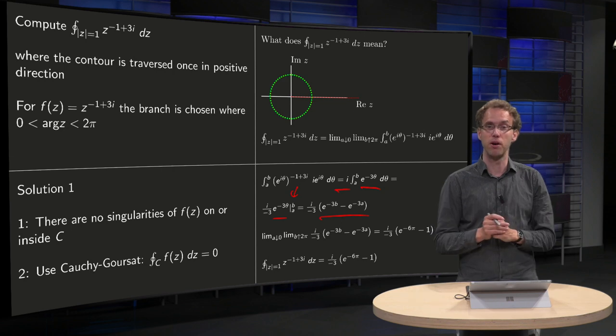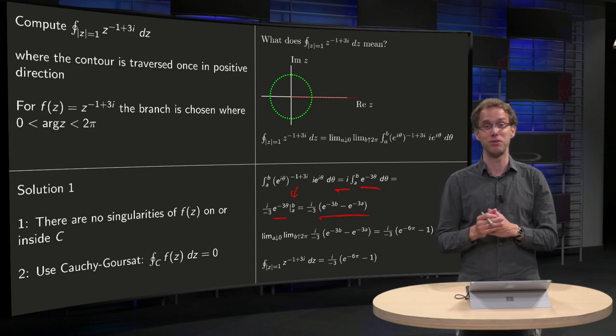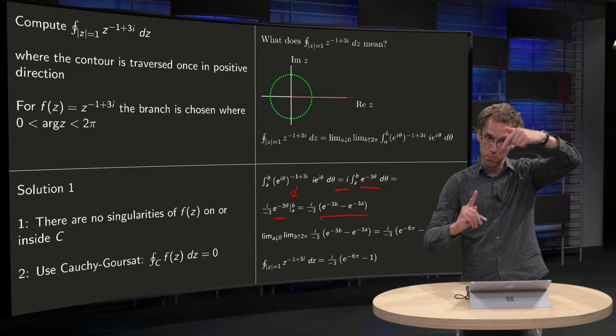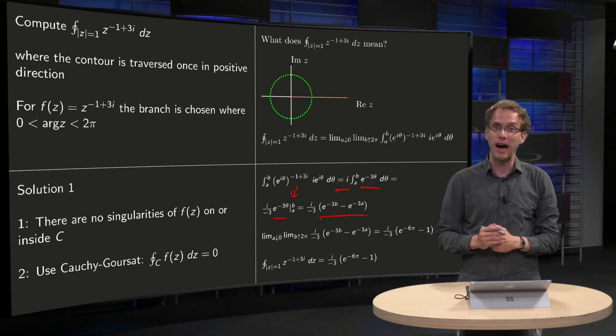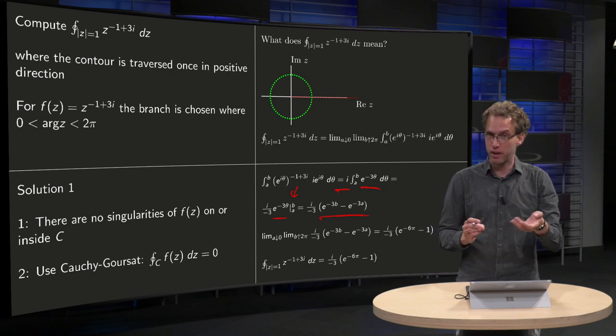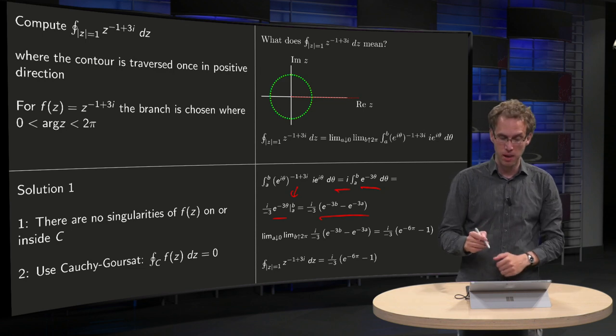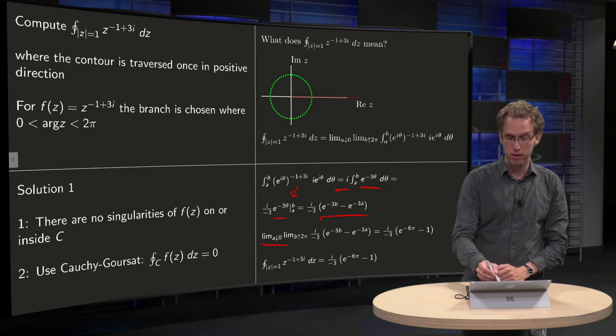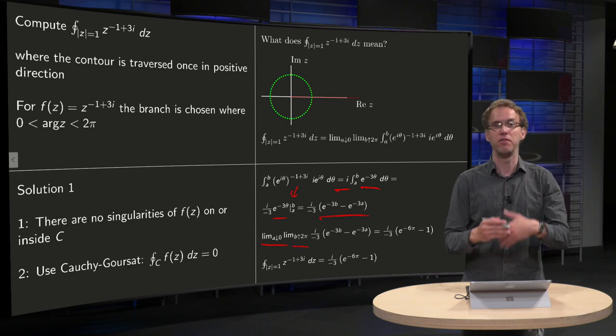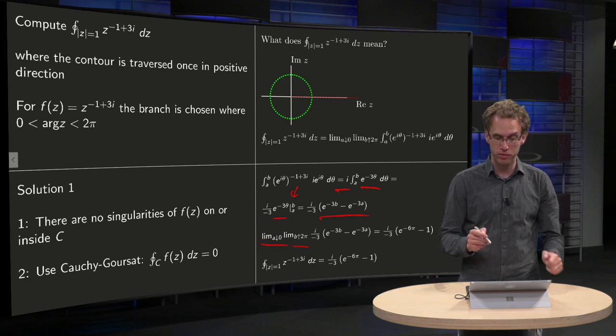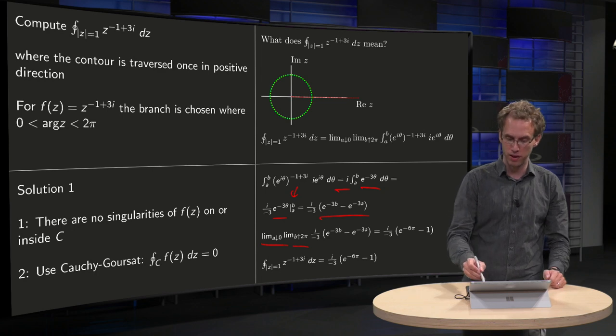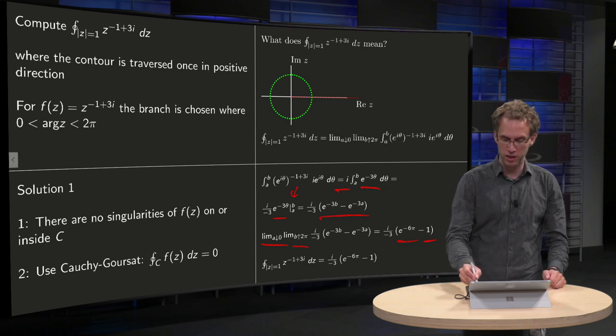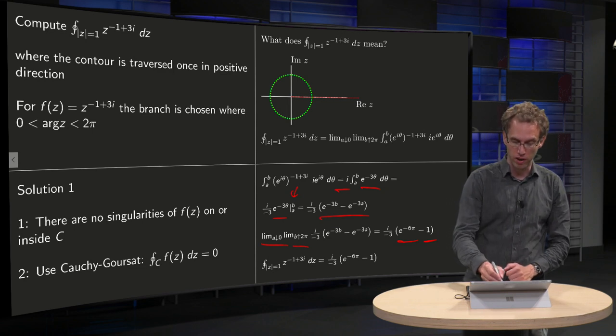No problems up till now. Then we have to take the limit, so now we are going to approach our branch cut, and then you see here a problem could arise, but let's see whether we can compute the limit here. So A to 0 and B to 2π, and we see there is fortunately no problem in those functions. You can just plug in the values of 2π and 0, and there we have our answer.